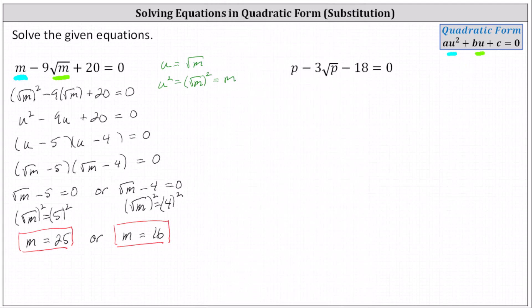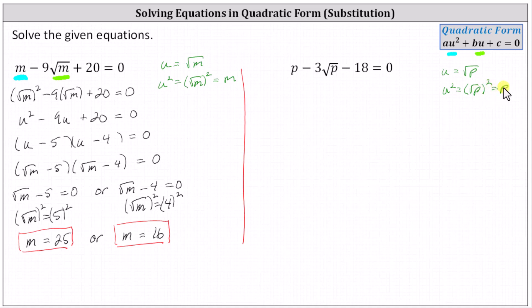Now let's take a look at our second equation. Notice it resembles the same form, where if we did want to perform substitution, we would have u equals the square root of p, and therefore u squared equals the square of the square root of p, which does equal p. We can recognize it's in quadratic form and skip replacing the square root of p with u, going straight to the factored form.